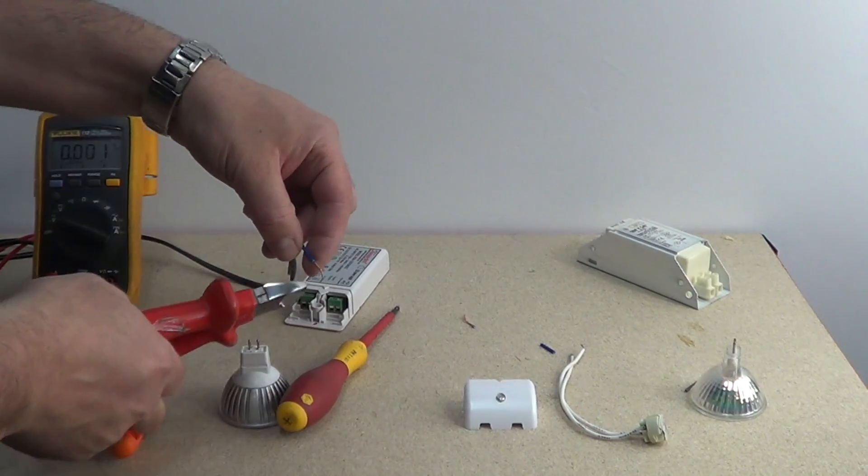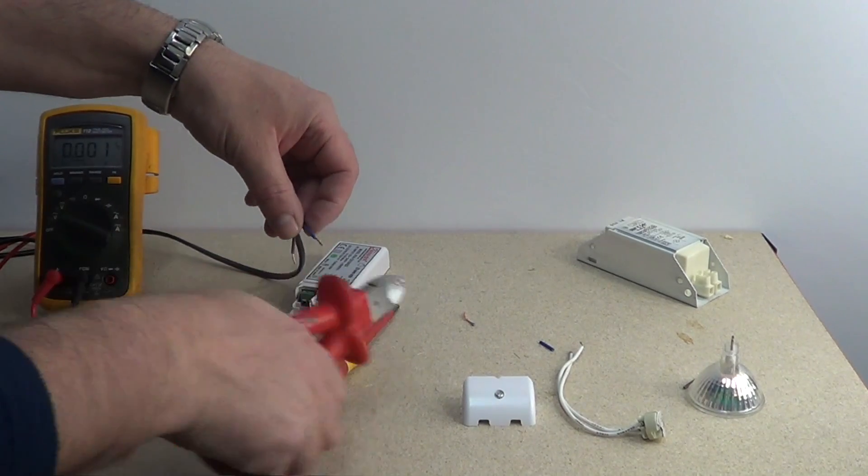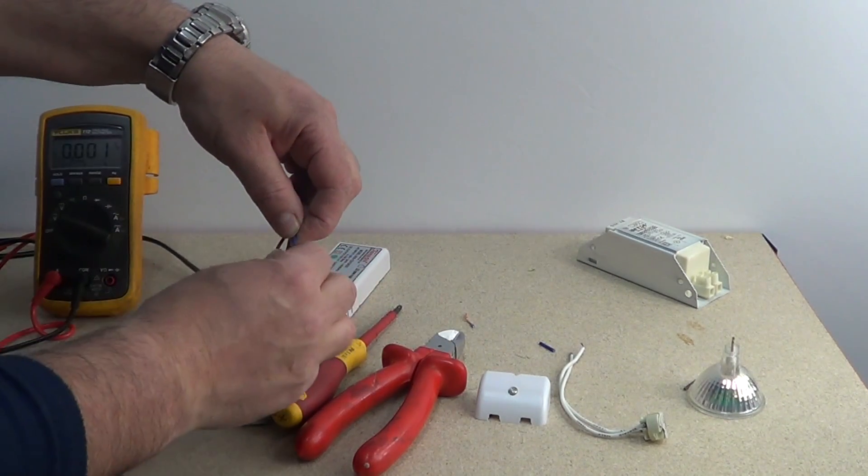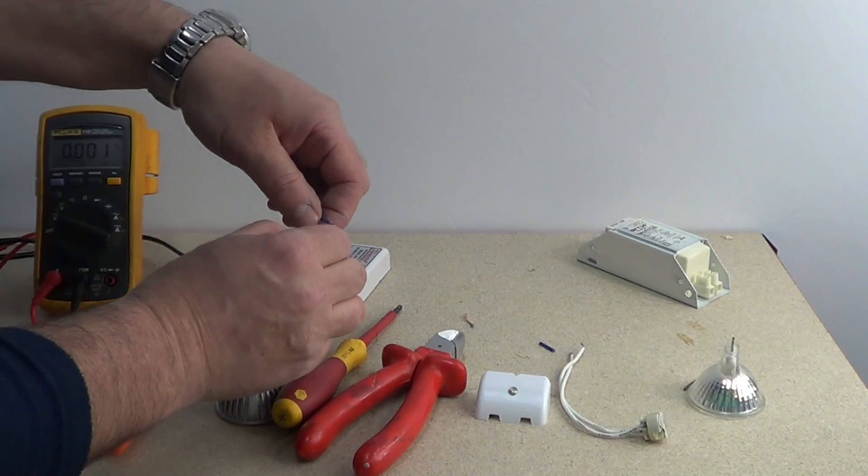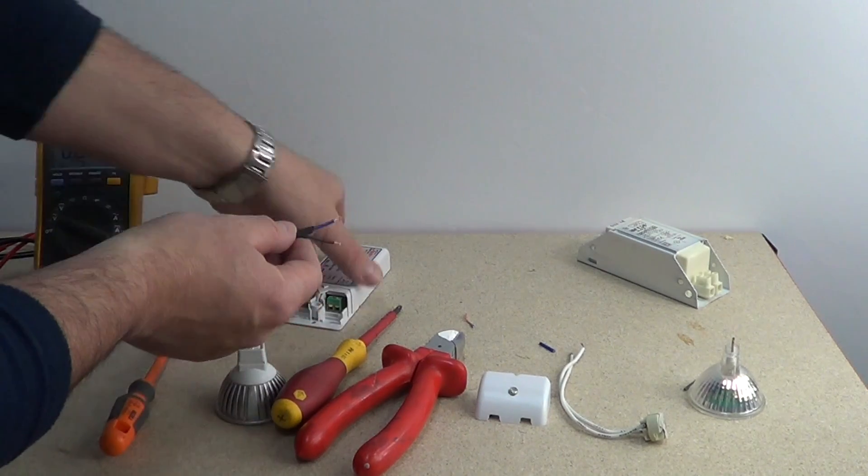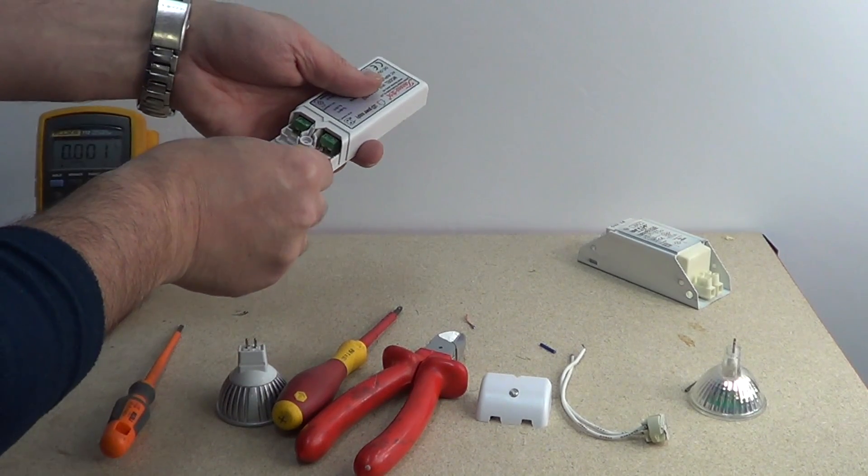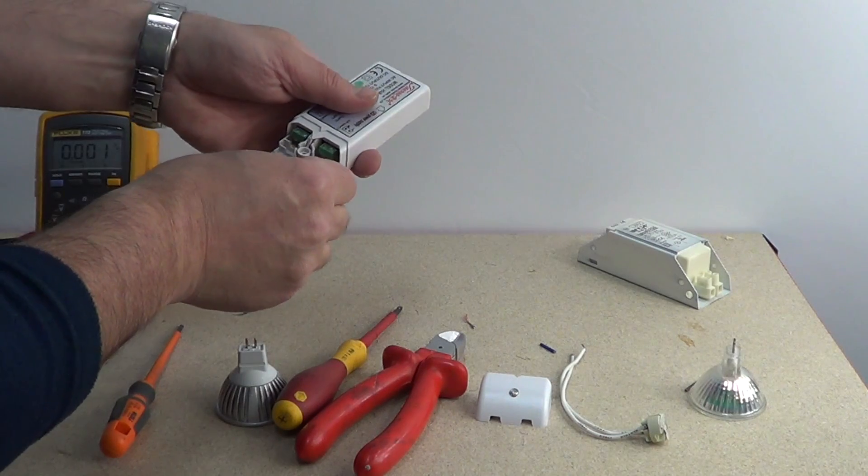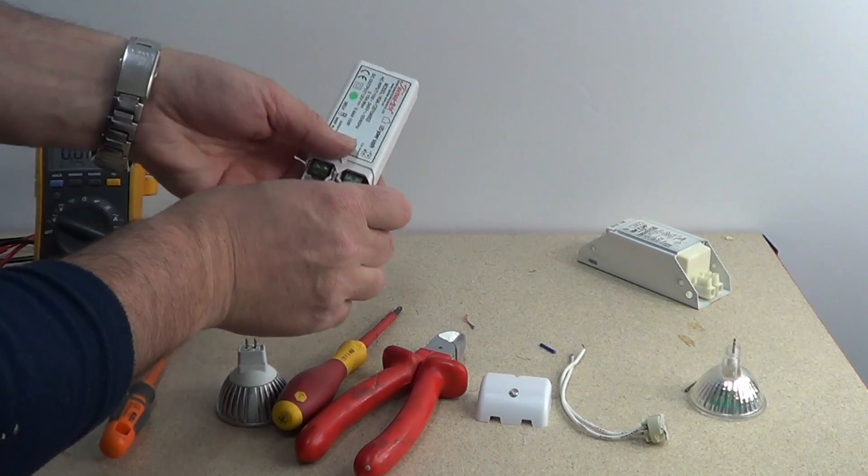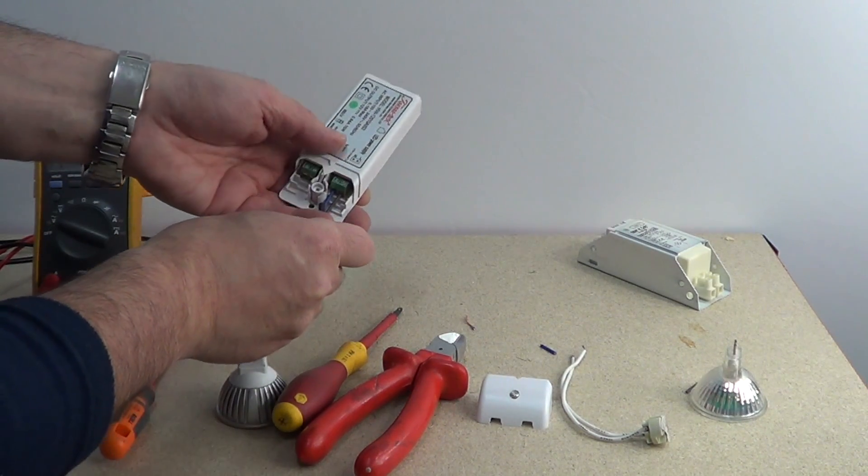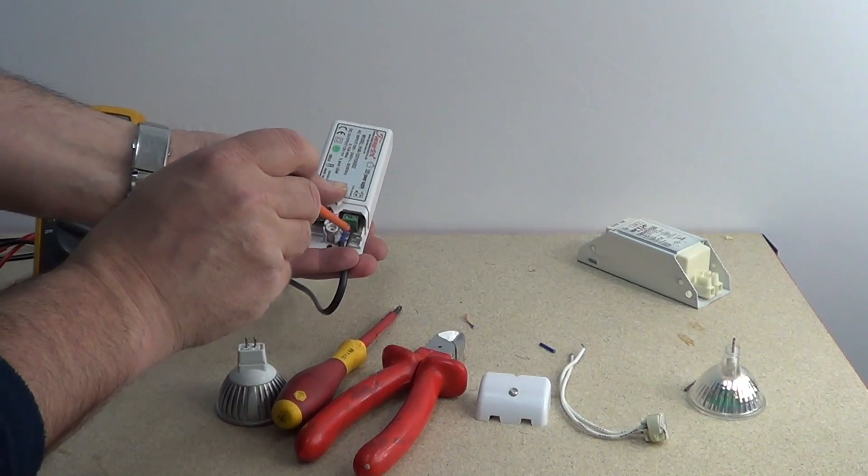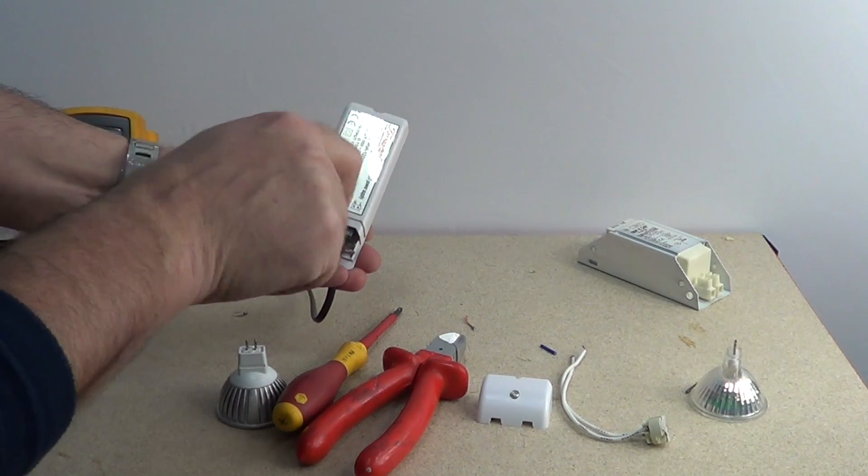I am just cutting mine back because they were a little long. I am doubling back the cables again so it fills the connector block better. As you can see no copper is protruding. And tighten your connections.